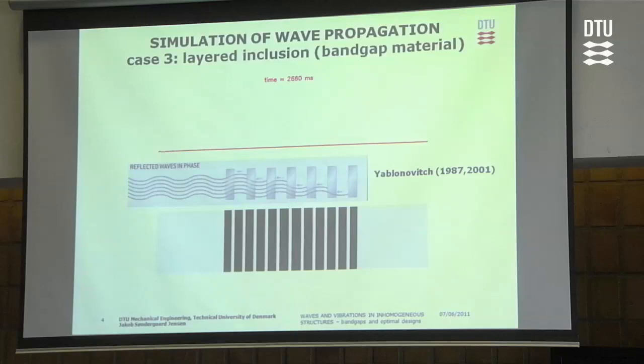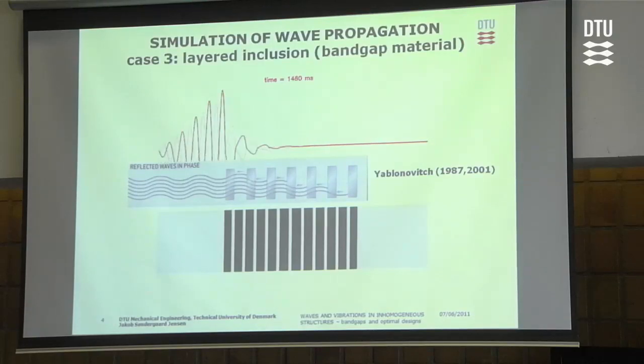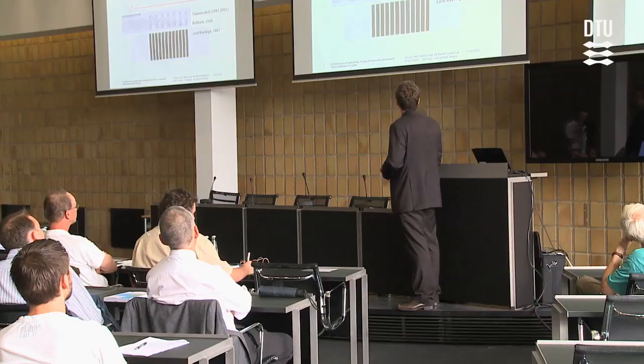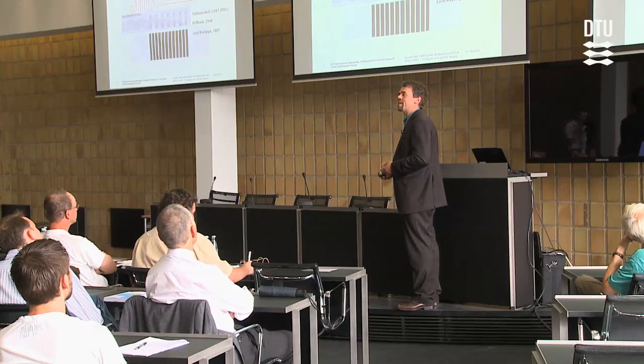Just by slicing up the inclusion into many periodic segments, we manage to reflect most of the wave. This is known as the band gap phenomenon. It seems like magic almost, but it's not. It was nicely explained by Eli Lebronovich, showing it's just an effect of reflected waves in phase from each of these inclusions. This phenomenon was thoroughly described already in 1946 by Belon, and we can date it back to Lord Rayleigh.